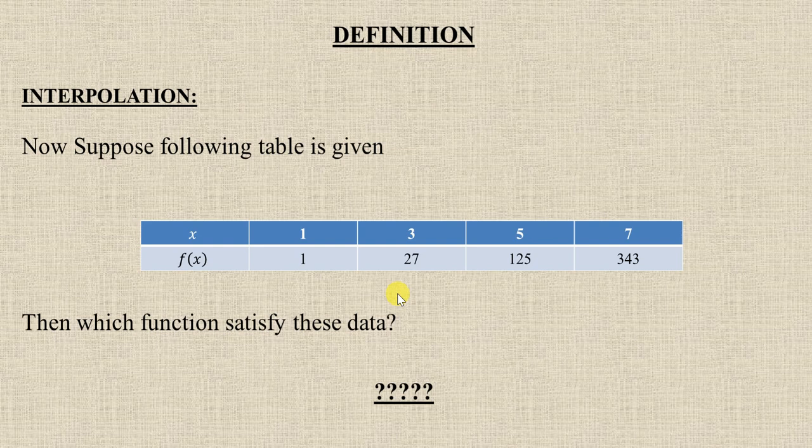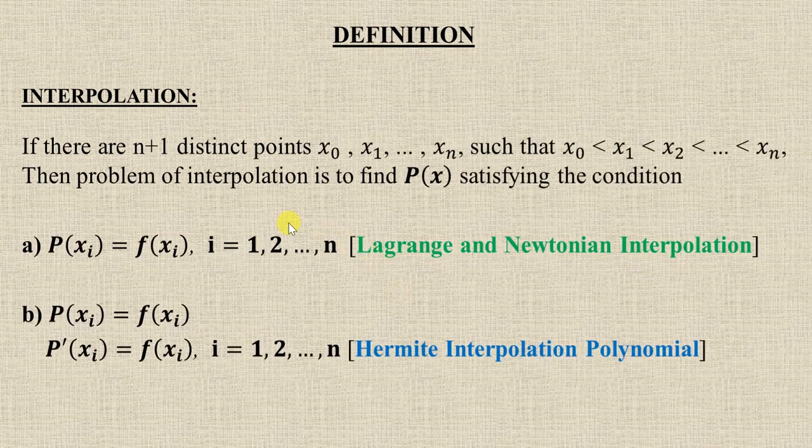Suppose n plus one distinct points are there: x₀, x₁, x₂ such that x₀ is less than x₁, x₁ is less than x₂ and so on. The problem of interpolation is to find P(x) which satisfies this condition.